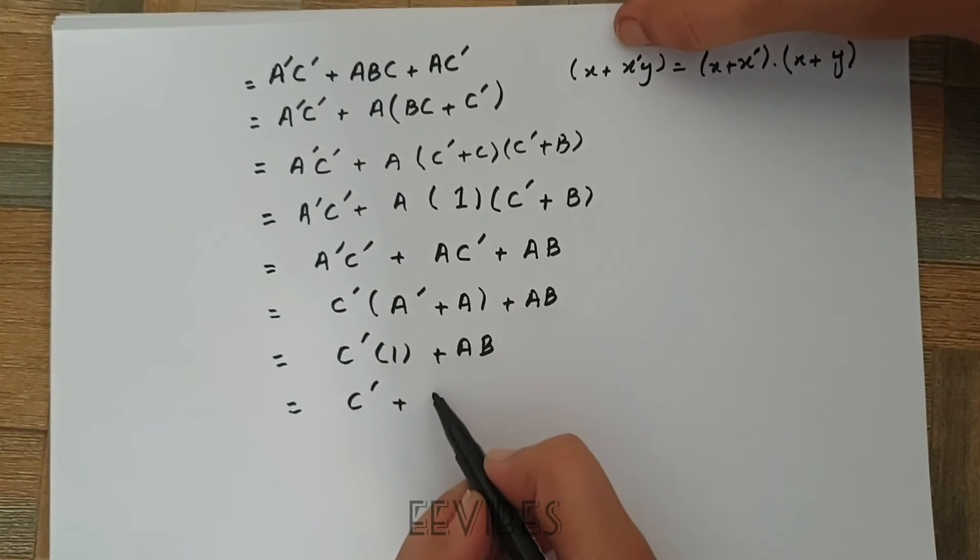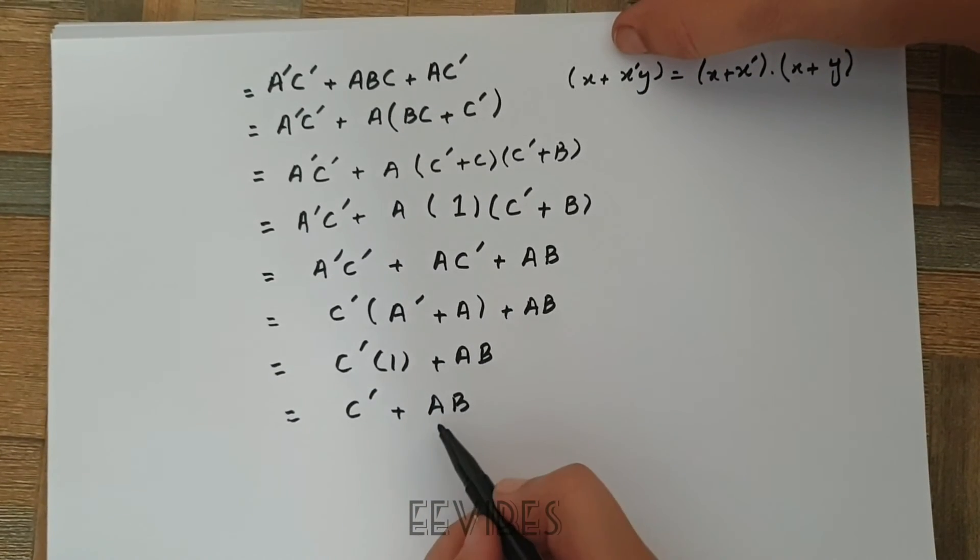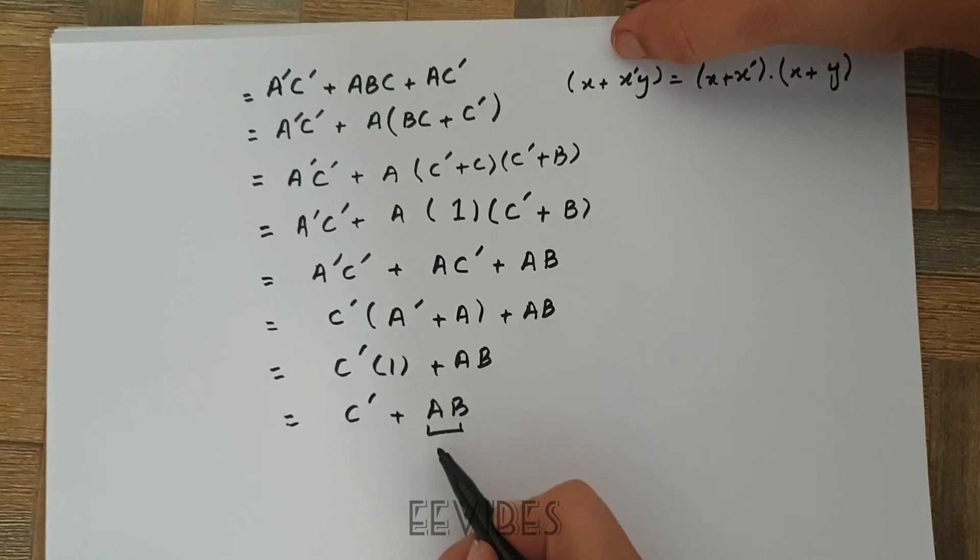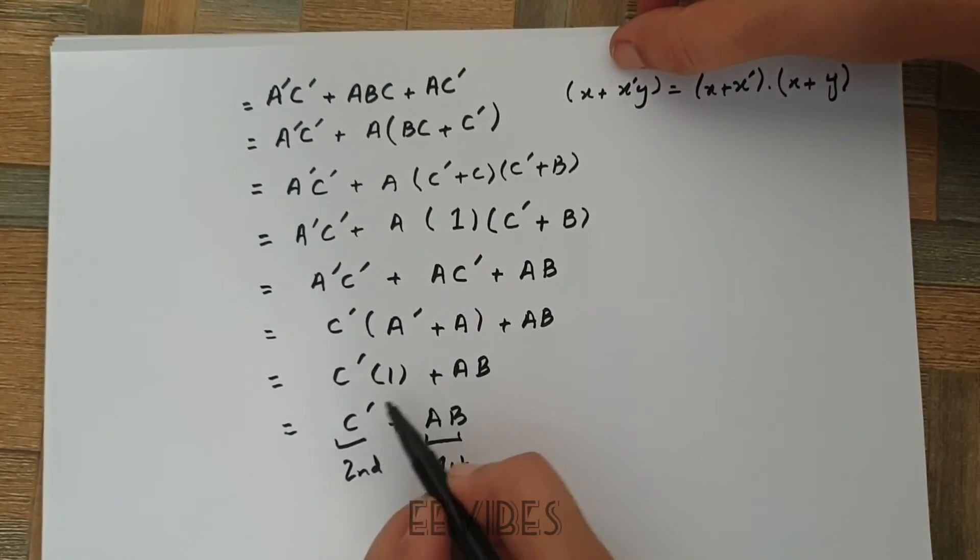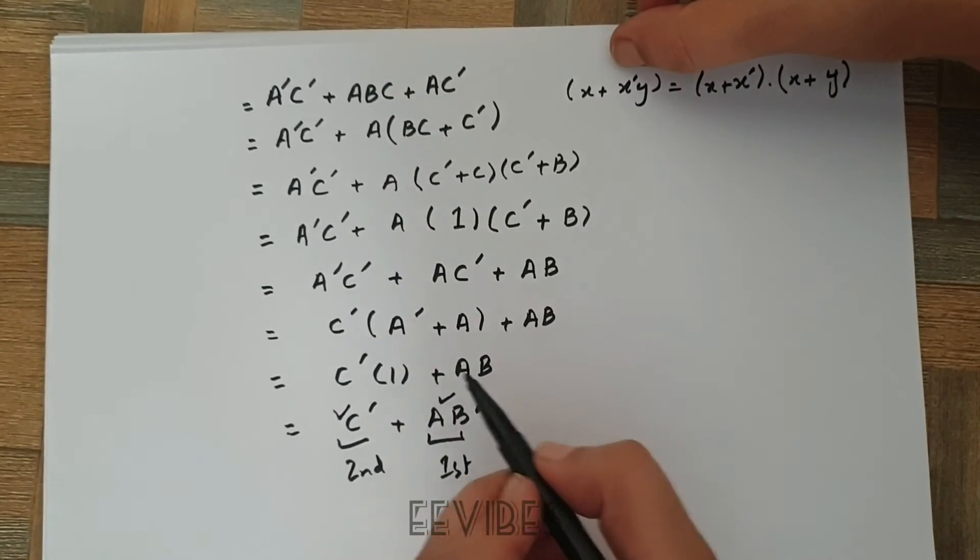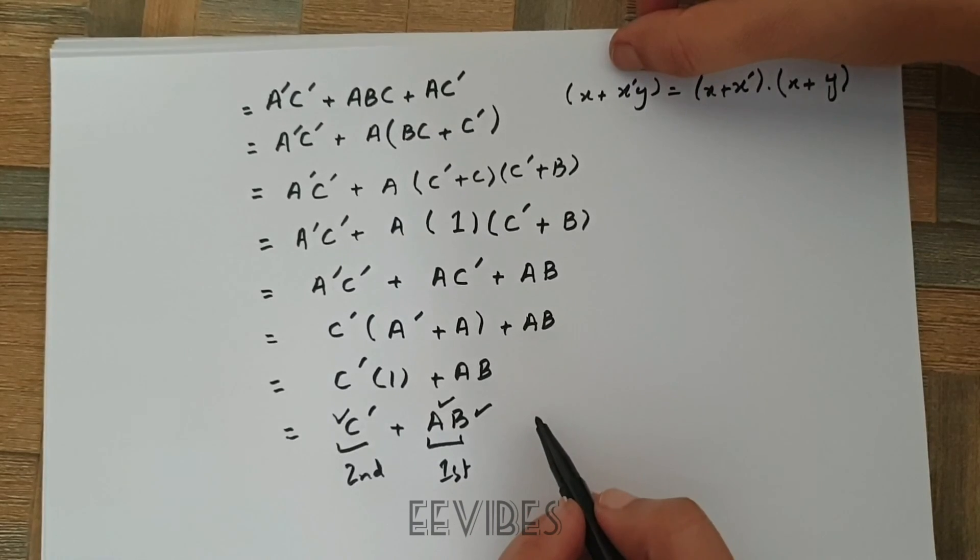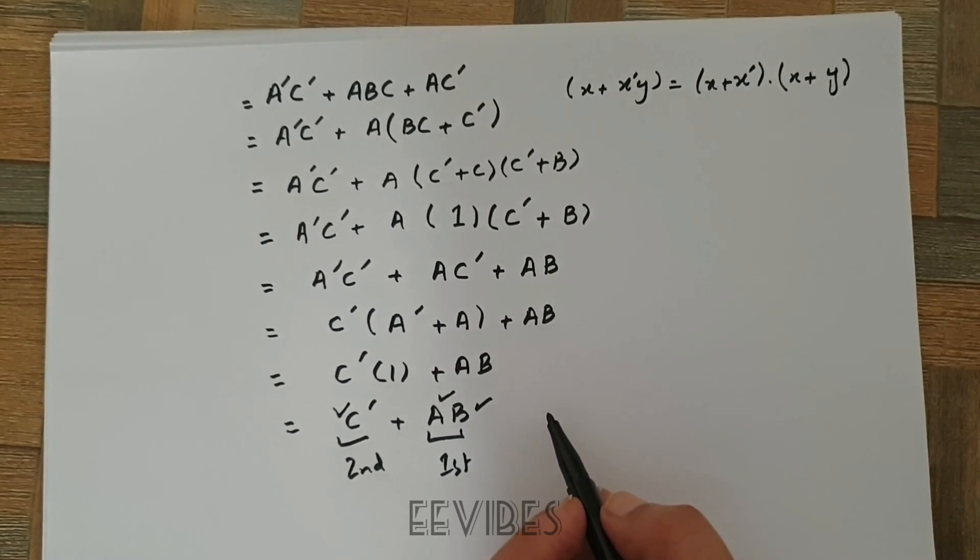So this is the first term, it's the second term, and how many literals are here? One, two, and three. So this is actually the simplified expression using the Boolean algebra.